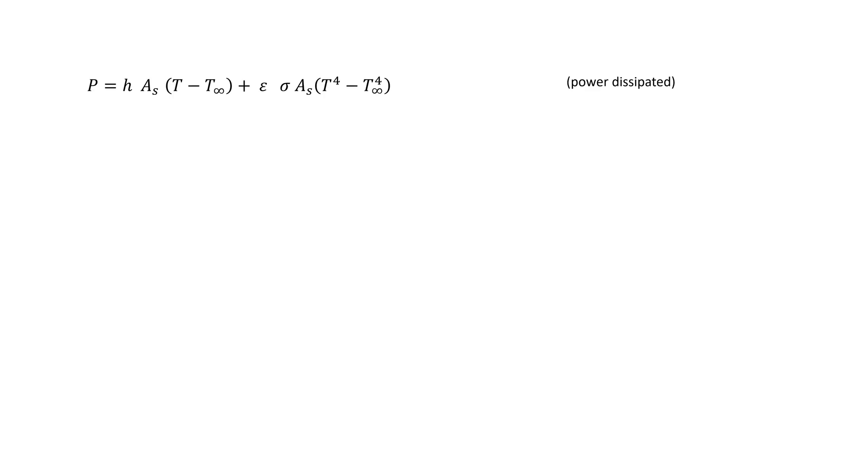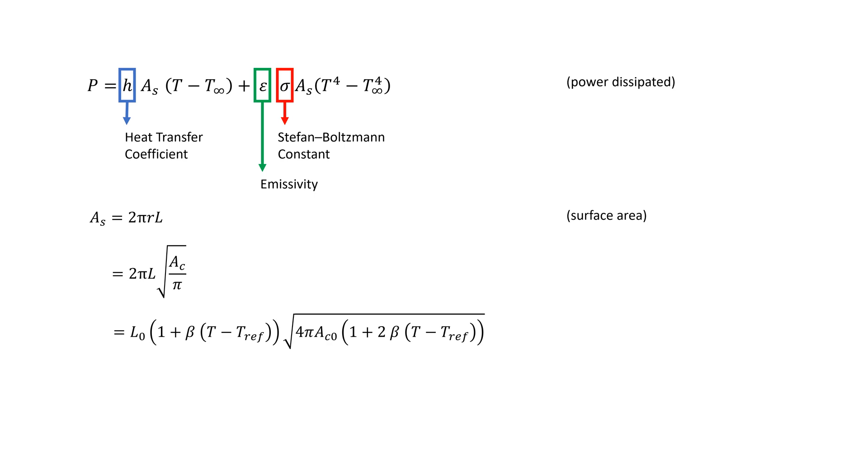We could write out the formula for convection and radiation. Here, h is the convection heat transfer constant. ε is the emissivity of the material. This depends on how shiny the material is. And σ is the Stefan-Boltzmann constant. A_s is the surface area of the coil. This is not to be confused with the cross-sectional area of the coil. We could write the surface area of the coil using the cross-sectional area and its length.